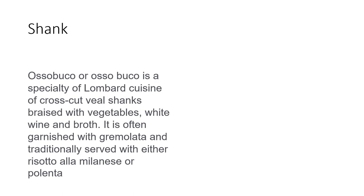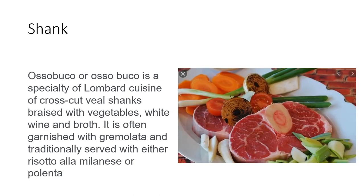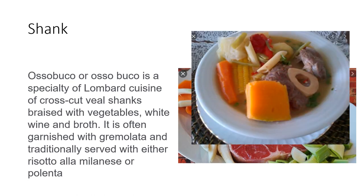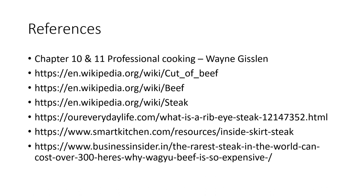Shank comes from either the foreleg or hind leg — both are called shank. Ossobuco is a typical example — the shank meat cut across on the bone. With that we are through with the carcass and identification of beef. Go through it carefully as there are many points where you need to pause and think more about it.